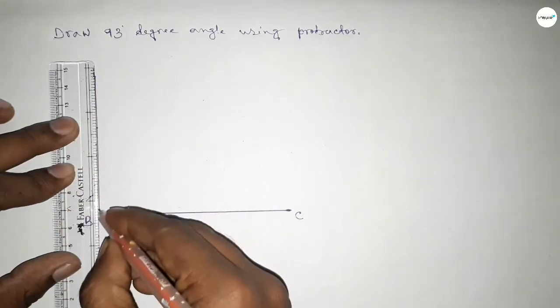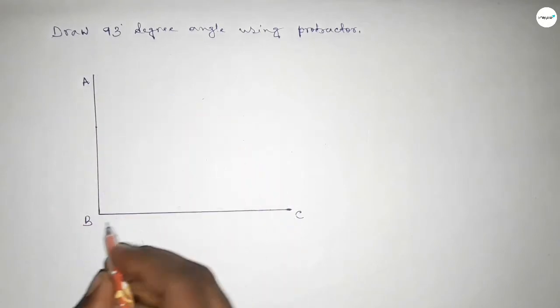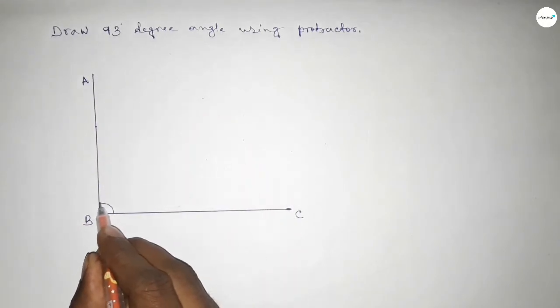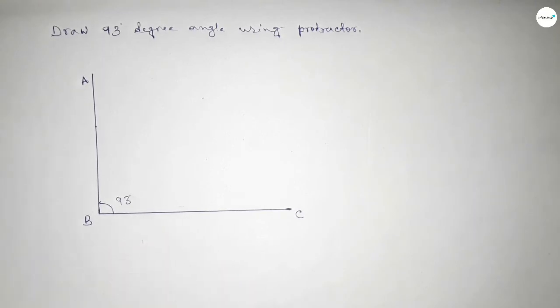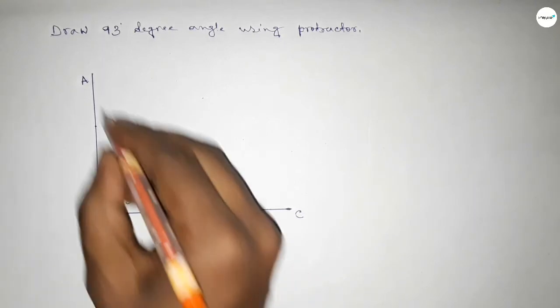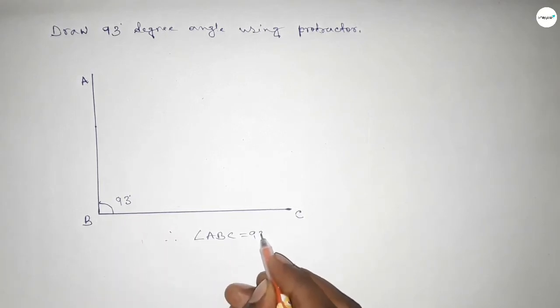So joining this and taking here point A. So angle ABC up to this, this is 93 degree angle. Therefore angle ABC equal to 93 degree angle.